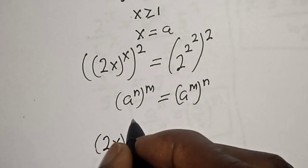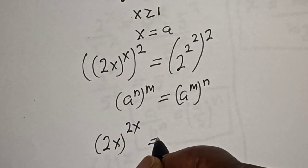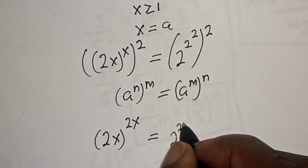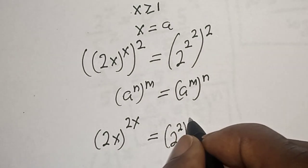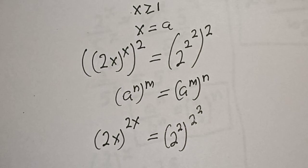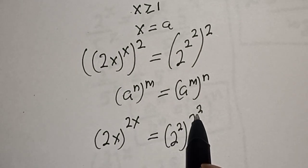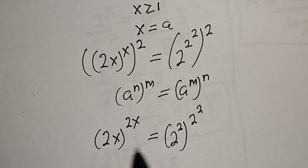Which is equal to 2 raised to power 2 to the power of 2, raised to power 2. Now by comparing, the exponent is equal to this exponent, and 2x is equal to 2^2.